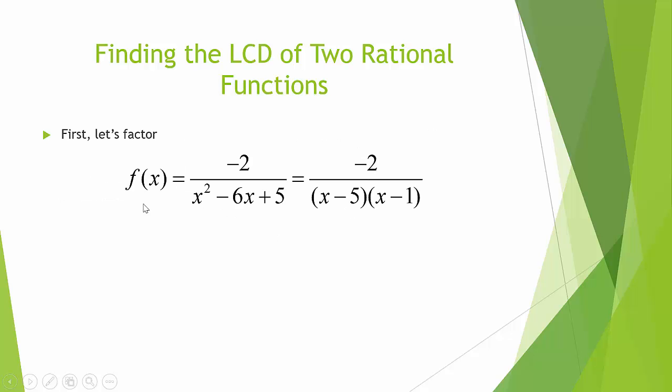First, we must factor the denominator of f of x. The trinomial x squared minus 6x plus 5 factors as x minus 5 times x minus 1.